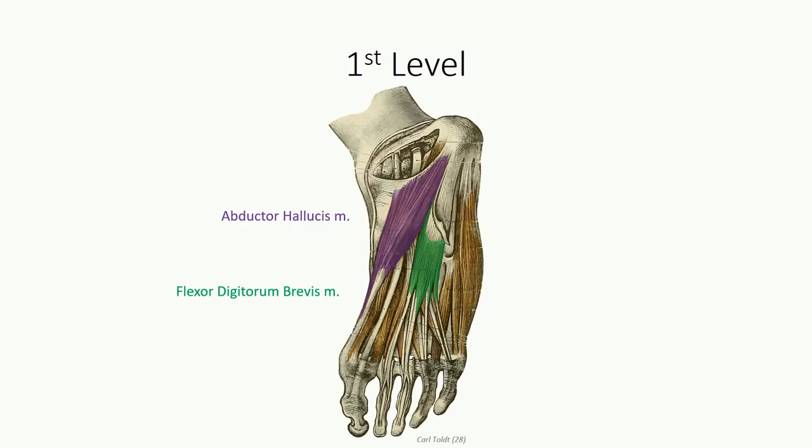A third muscle is abductor digiti minimi, seen in the lateral compartment. It originates off the calcaneal tuberosity — this time the lateral portion — and inserts along the lateral surface of the base of the proximal phalanx of the fifth digit. This is an abductor and flexor of the fifth digit.